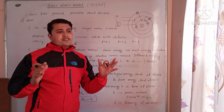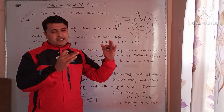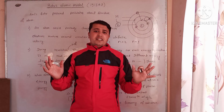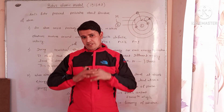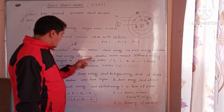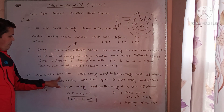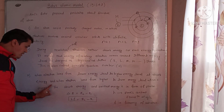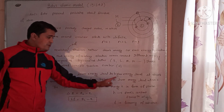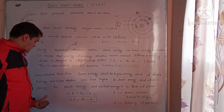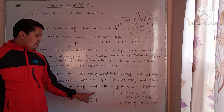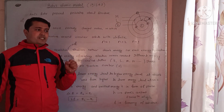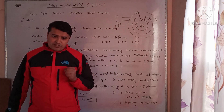When electrons jump from a lower energy level to a higher energy level, they absorb energy. When electrons jump from a higher energy level to a lower energy level, they emit energy. The absorbed or emitted energy is in the form of photons, which are radiated from the electron.